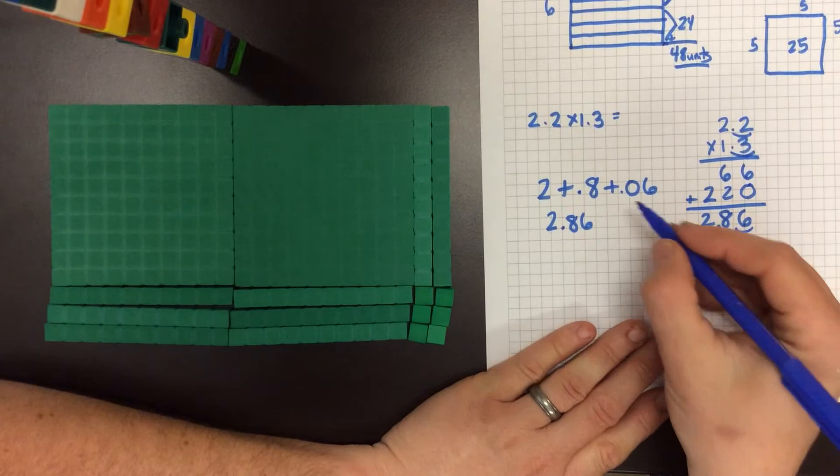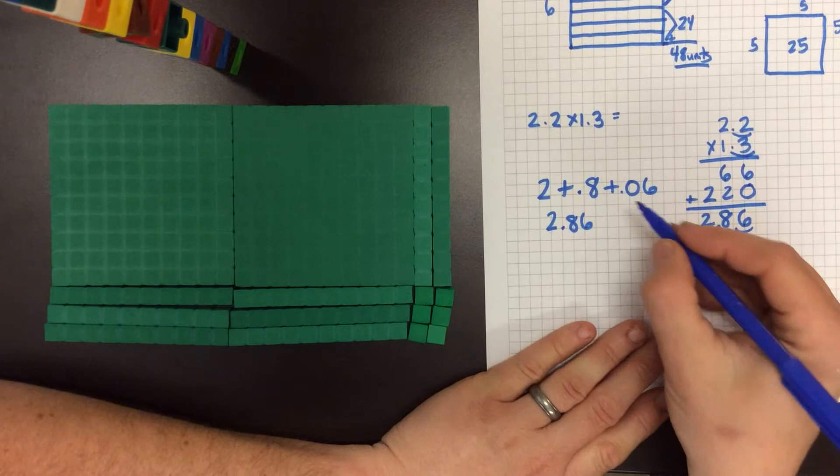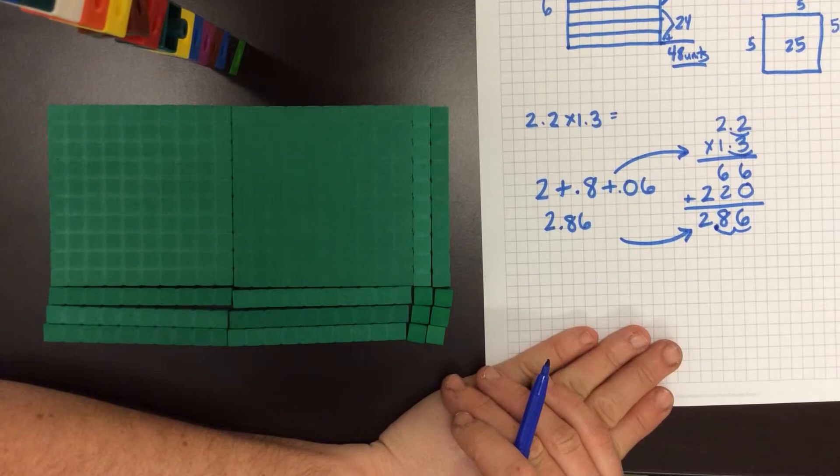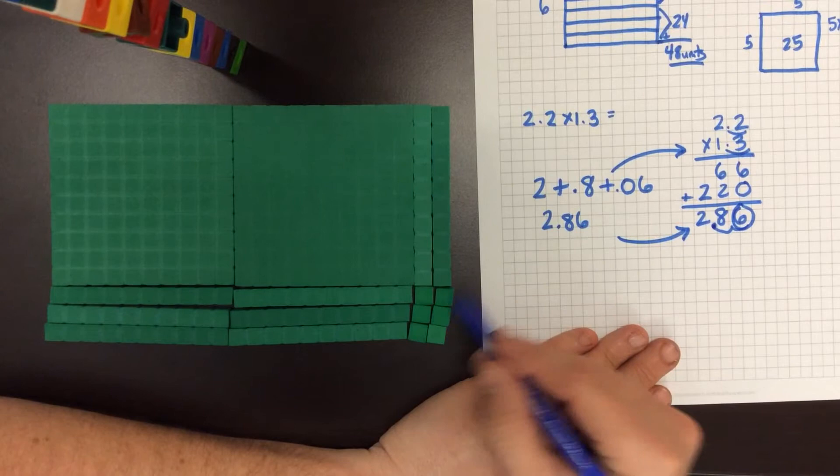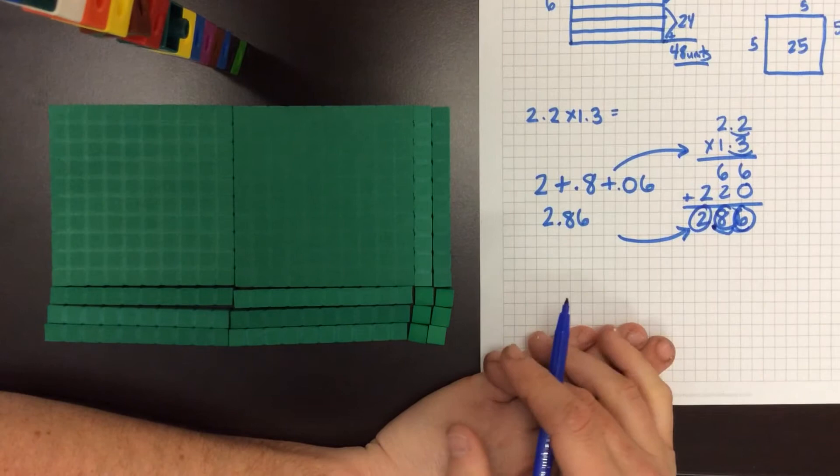We want to make this visual link for students so they can see what's happening within our numbers. So we can see that we have the six hundredths, the eight tenths, and the two wholes. And we'll do this to get that really concrete understanding of what's happening for a little while.